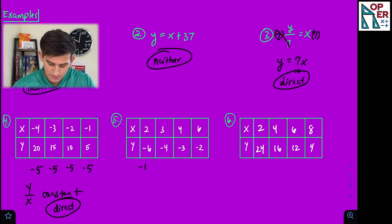Negative six times two is negative 12, negative four times three, negative three times four, and negative two times six. Notice how now x times y is constant, and so this would be our example of indirect variation.